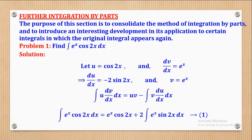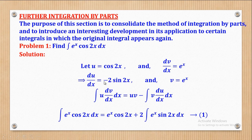So u·dv/dx is the given integral — u is cos(2x) and dv/dx is e^x. When you apply the formula, it will be equal to u·v, so I look for u which is cos(2x) and v which is e^x, giving e^x cos(2x). Then minus the integral of v·du/dx: v is e^x and du/dx is negative 2 sin(2x). The two negatives give a positive, so we get positive 2e^x sin(2x). The 2 is a constant so you can pull it out. I shall call this equation 1, and the next part will be to get the integral of e^x sin(2x).